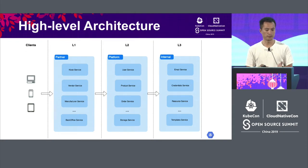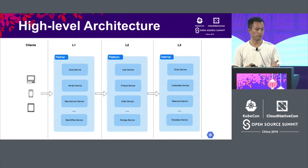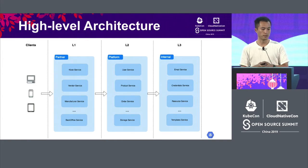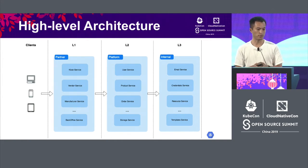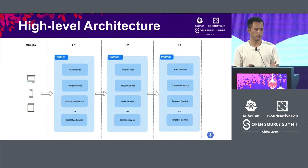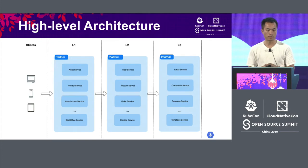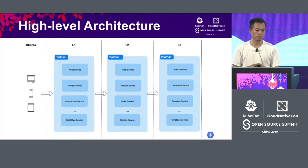So we divide these services into layers. We have layer one, which are our partner services; layer two, which are platform services; and layer three for internal services. On each layer, we apply a different authorization scheme.